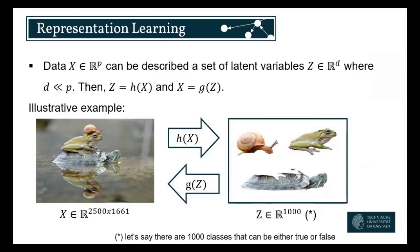For representation, the usual setup is that we have some data of D dimensions, which we assume can be described as latent variables with d dimensions. The idea is that our original space — the image space — is much higher dimensional than the latent space. For example, we have our image with 2,500 times 1,600 pixels. If we say there are 1,000 classes which can be binary — one of these is frog and so on — then representation learning would mean taking this image, applying function h, and getting the representation of these latent variables. Then there's the other function from the representation back to the image, often called the generative function.